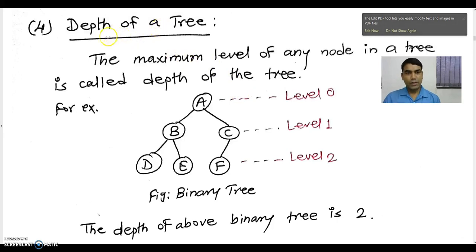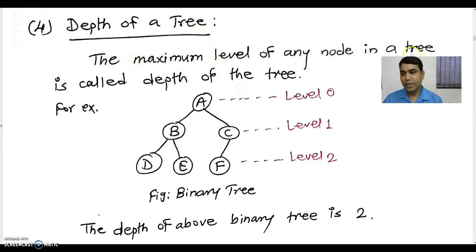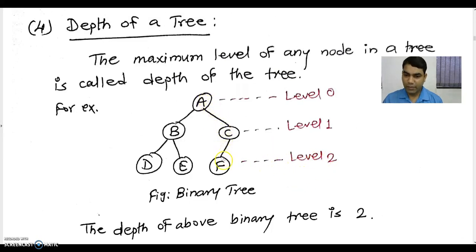The next term is depth of the binary tree. The maximum level of any node in a tree is called the depth of the tree. Consider this diagram. The root node is placed at level 0, these children are placed at level 1, and the next children are placed at level 2. The maximum level of any node in the diagram is 2, so the depth of this binary tree is 2.